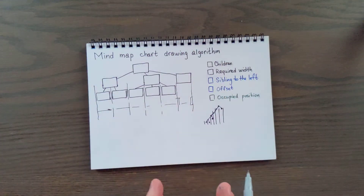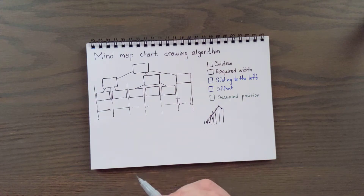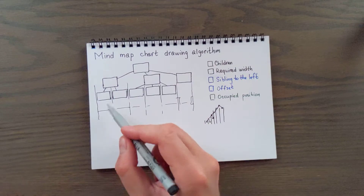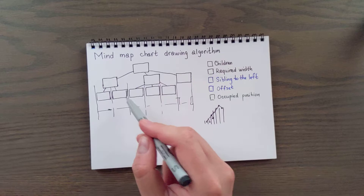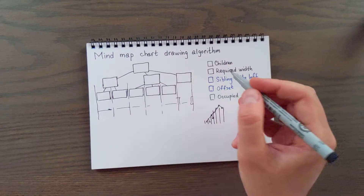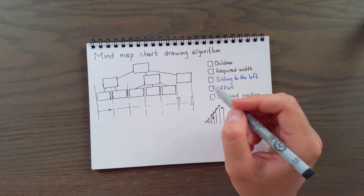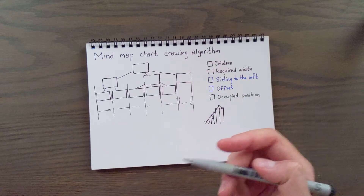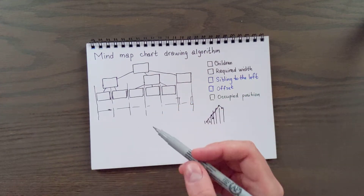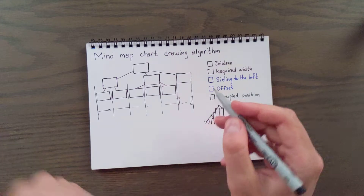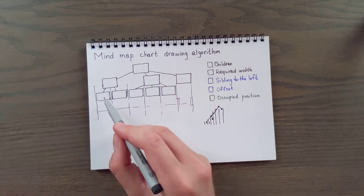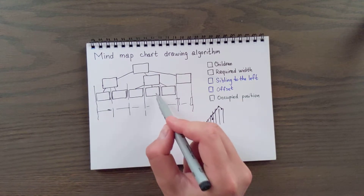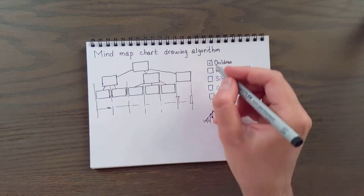So how do you do that? First, each node has its parent — we enter each node's parent. Step number one is to calculate children. It's a simple formula: just a reverse lookup — find all nodes whose parent is this row. So this node has these three children, this node has these two children, this one has three children, and this one has no children.